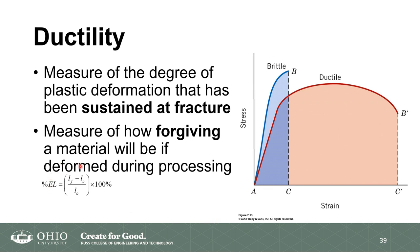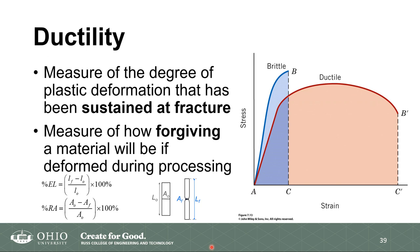You can calculate percent elongation by taking the strain at fracture and multiplying it by 100%. If we assume that the volume of the material doesn't change, then as we apply tension and the material lengthens, the cross-sectional area also becomes smaller. We can therefore also relate ductility to the percent reduction in area. Both of these numbers will be larger if the material is ductile and smaller if the material is brittle.